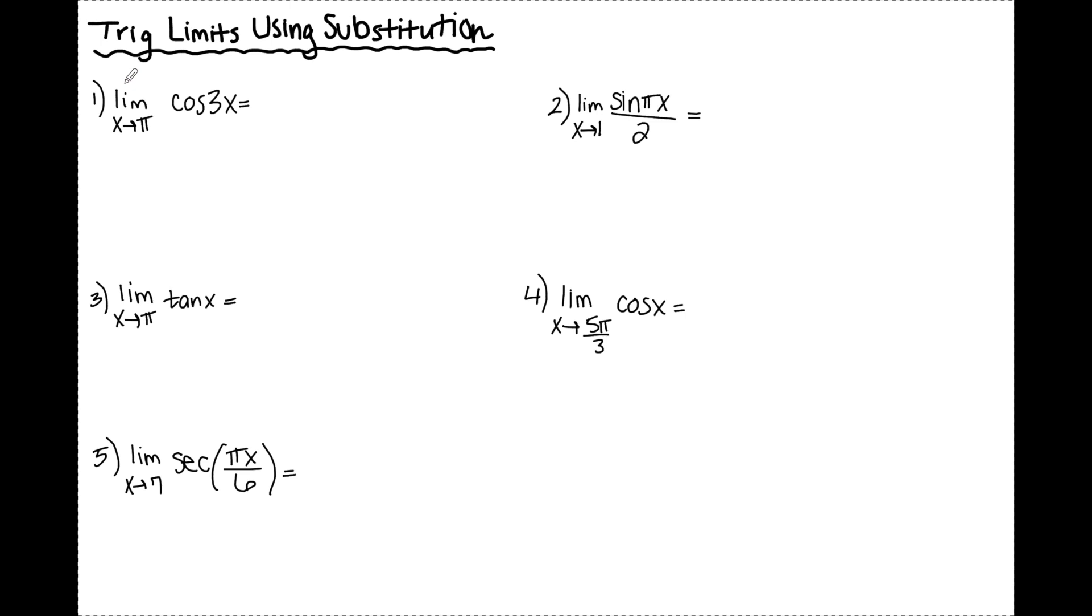So in number one, we have the limit as x is approaching π of cosine 3x. So I'm just going to plug π in for x so that I have cosine of 3π. Now I just need to find this value.